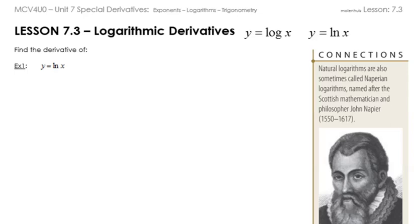Let's get started with ln x first. We need to figure out the derivative, but I don't know what the derivative of ln x is. So let's rewrite it: ln is specifically log with a base of e. So y equals ln x is the same as log base e of x. If you had a different base like log base 5 of x, it wouldn't be ln x anymore.